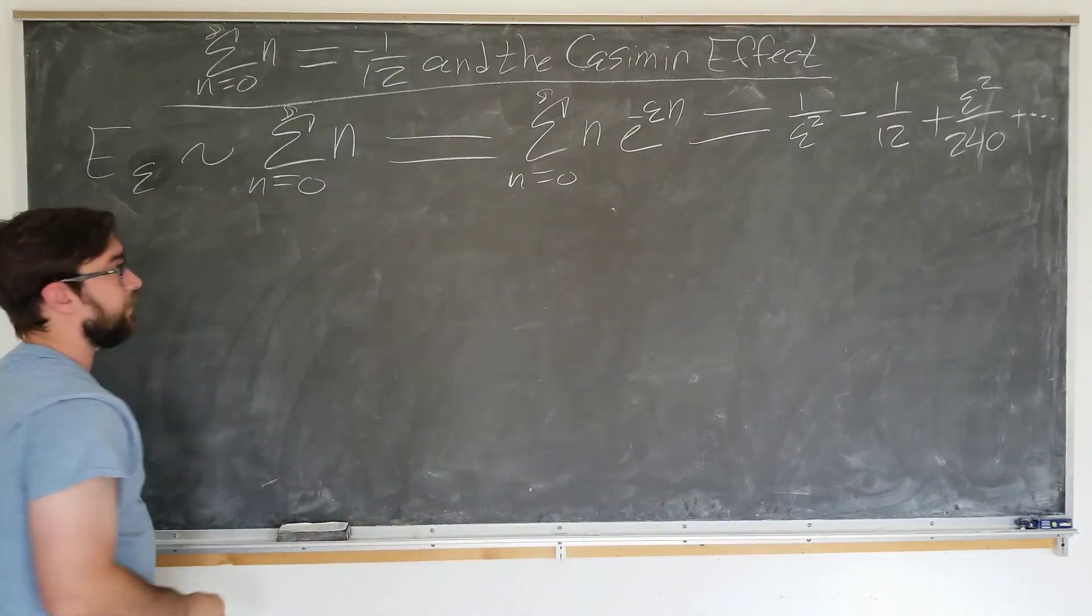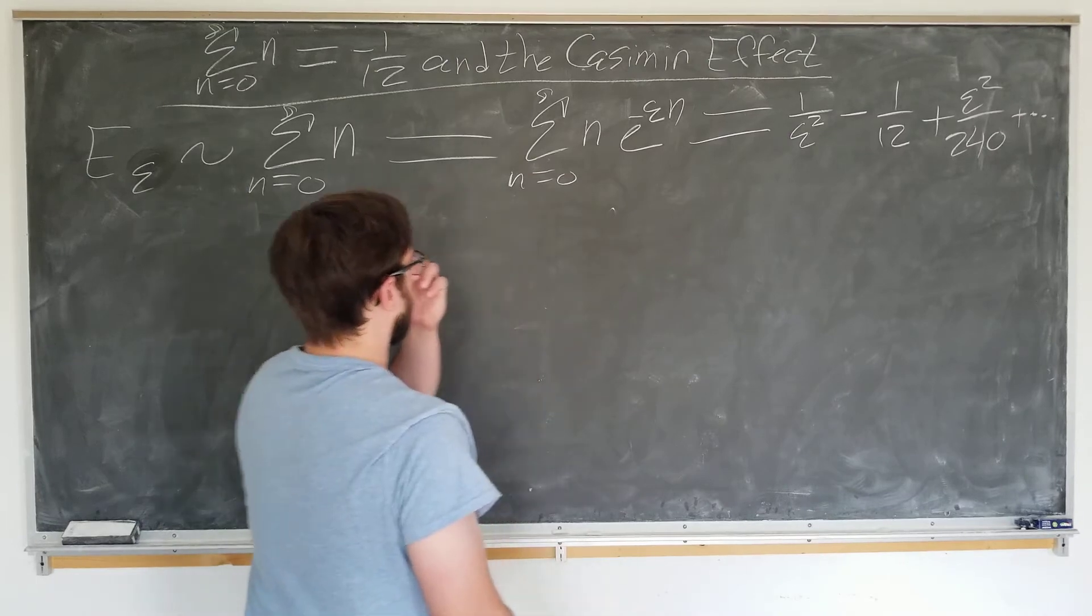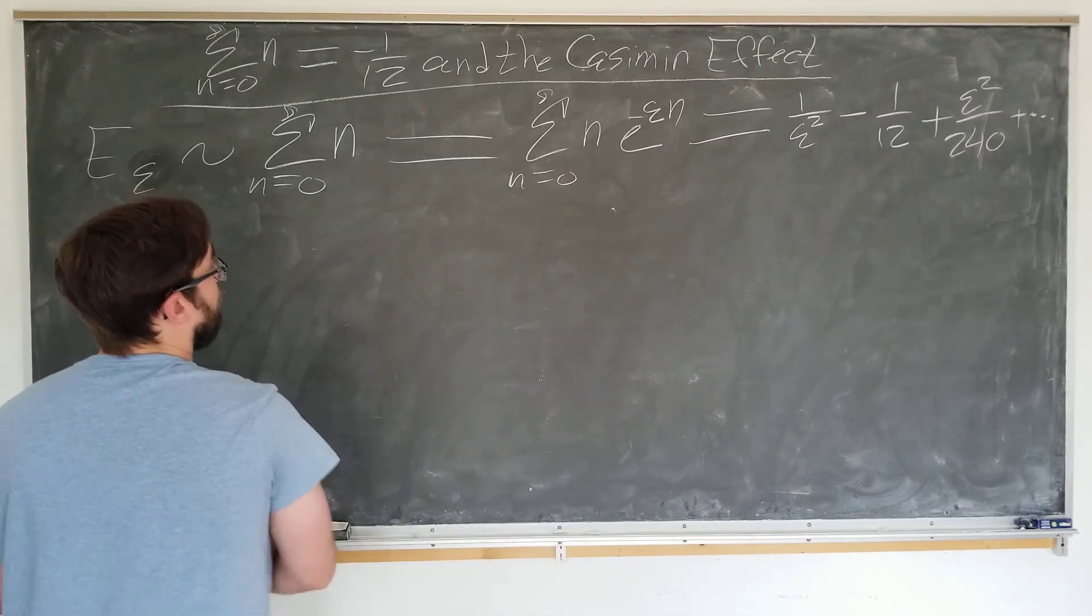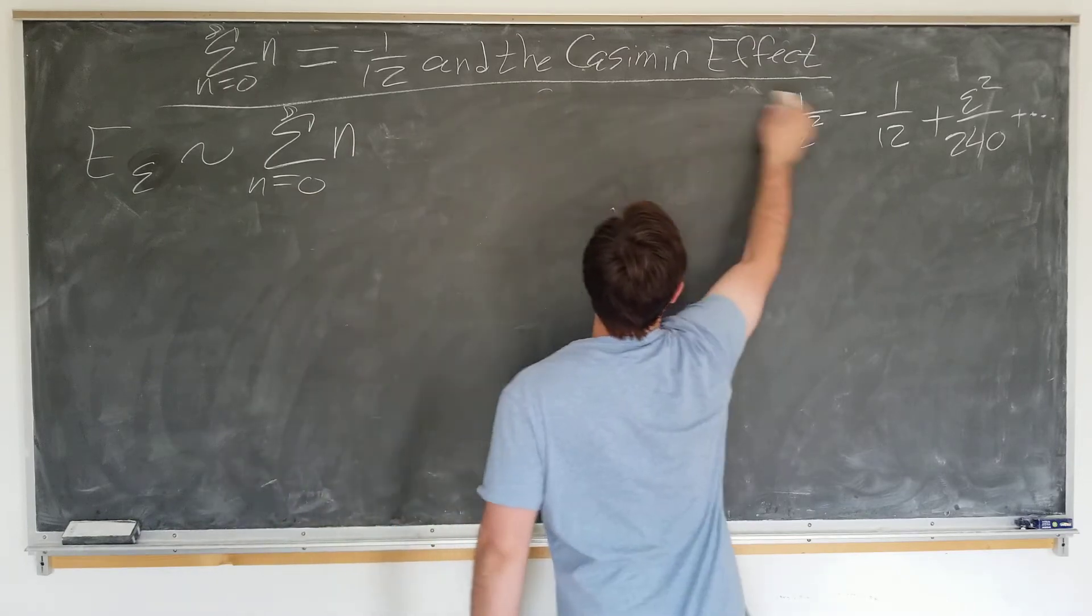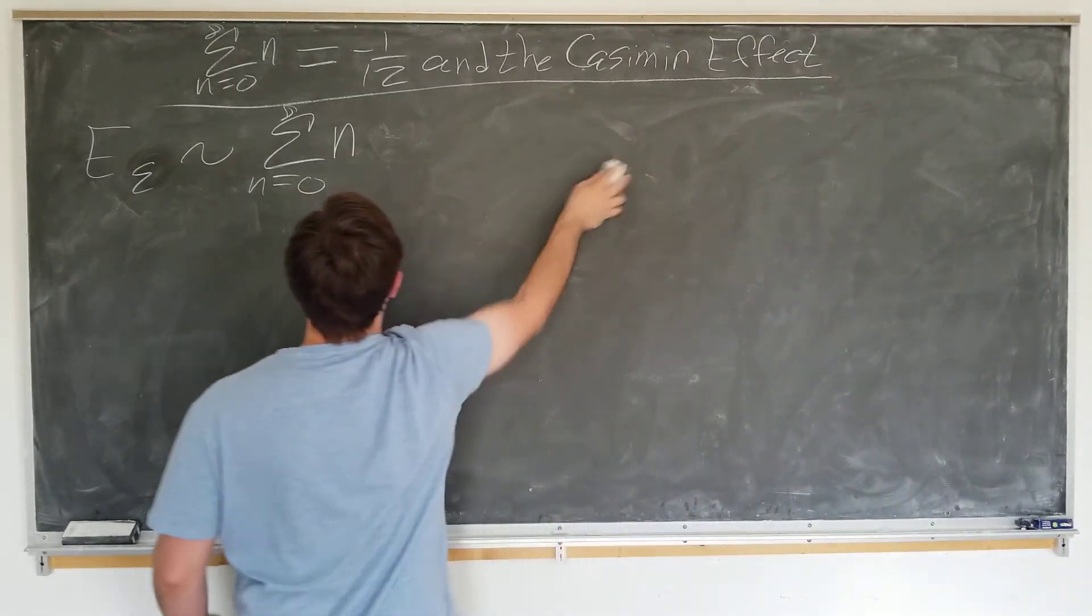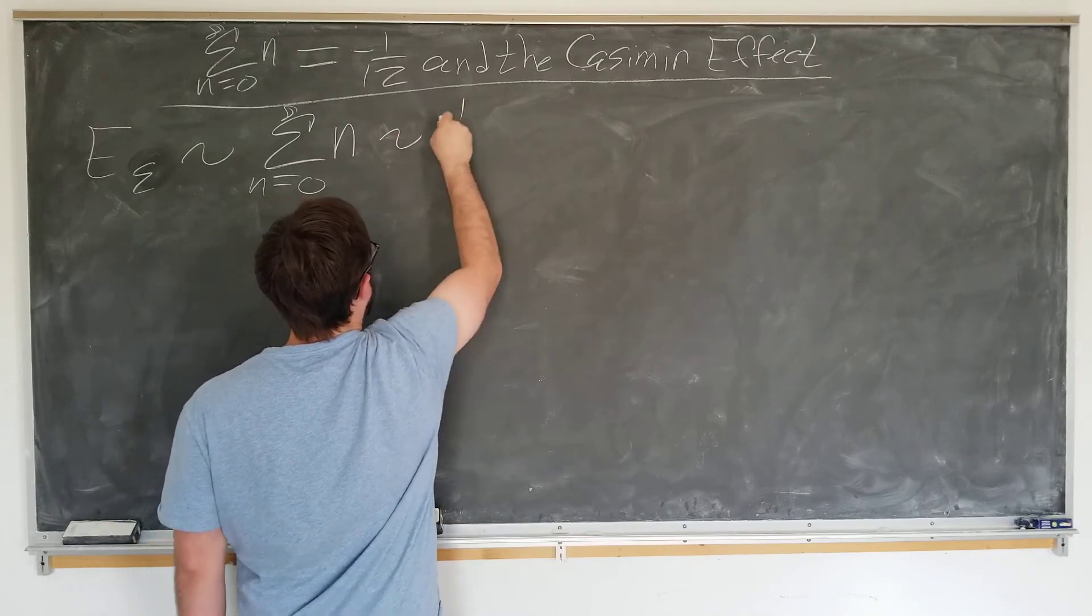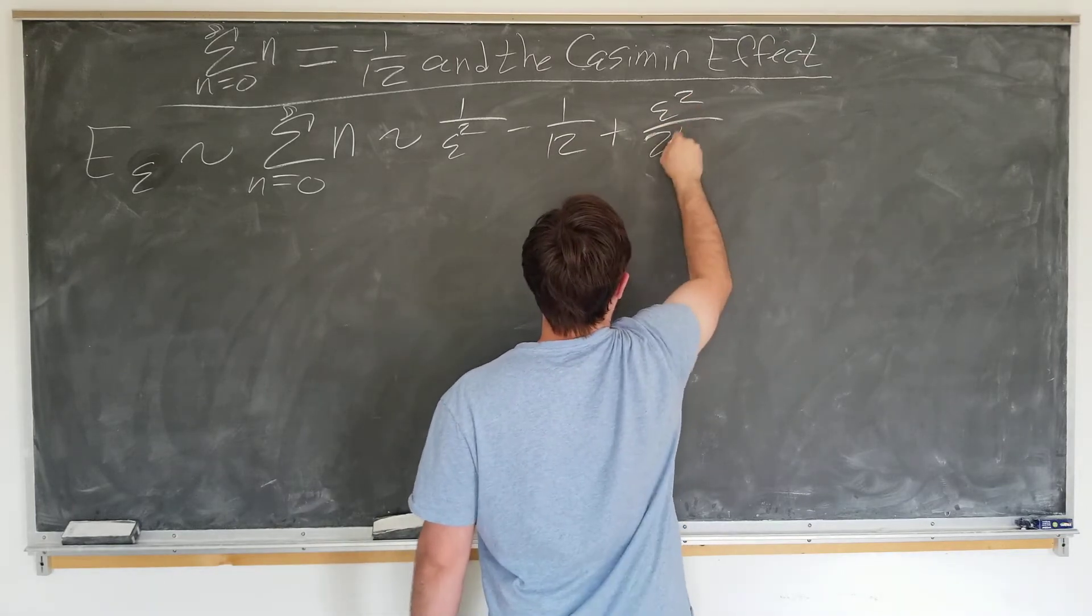We're not quite done yet. Now we have to let epsilon go to zero since we've used it to evaluate the sum. And just for clarity, let's go ahead and erase this and put this back here where it belongs. This is approximately 1 over epsilon squared minus 1/12 plus epsilon squared over 240.